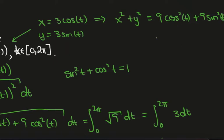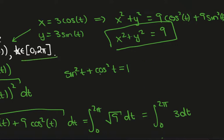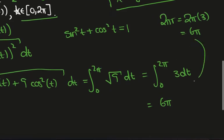And this is just 9 by the Pythagorean identity, so it's a circle of radius 3, and it's a full revolution around the circle, so we should expect the arc length to be 2πr, which is 2π times 3, which is 6π, and this is what we got here.